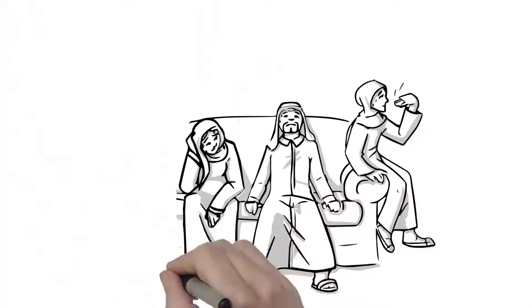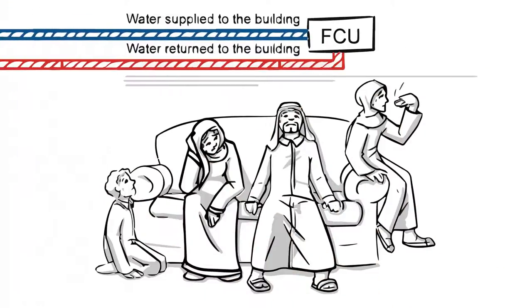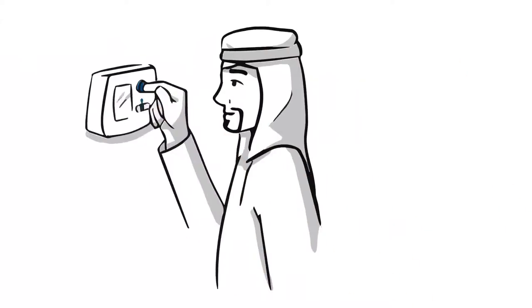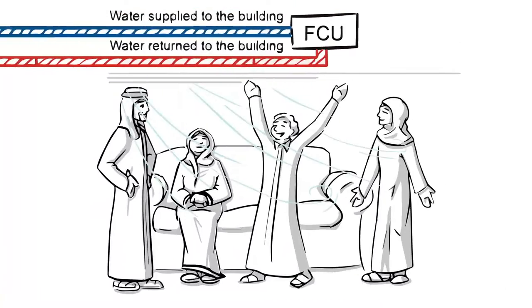Each apartment has an individual cooling capacity which is measured in tonne of refrigeration. When the thermostat is turned on, the cooled air is released, resulting in a happy, cool customer.